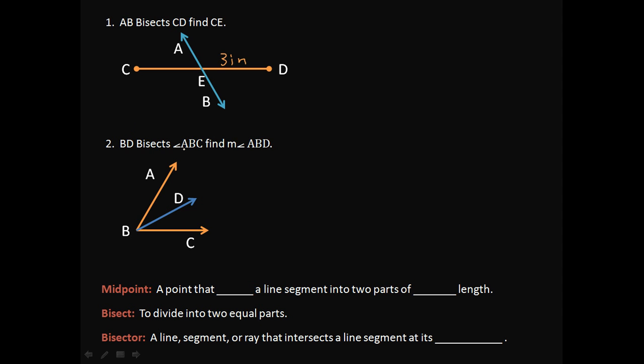BD bisects angle ABC, find the measure of angle ABD. So that means that DBC, we need an angle measurement. And I'm going to tell you that this is 30 degrees. So if BD bisects ABC, the big angle, find the measure of this missing angle here. Now go ahead and fill in these with the blanks here with the answers. Go ahead and pause it.